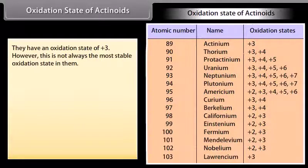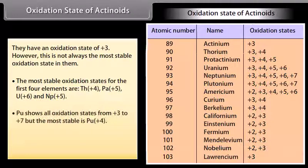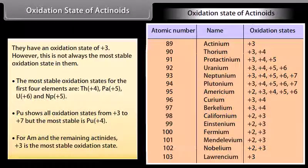The oxidation state of actinoids is +3; however, this is not always the most stable oxidation state. The most stable oxidation states for the first four elements are: thorium +4, protactinium +5, uranium +6, and neptunium +5. Plutonium shows all oxidation states from +3 to +7, but the most stable is +4. For americium and the remaining actinoids, +3 is the most stable oxidation state.